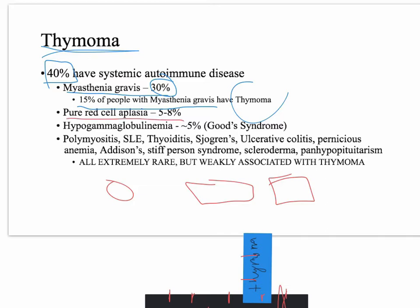There's also pure red cell aplasia: if you have a thymoma, you have a 5% to 8% chance of coexisting pure red cell aplasia, and a 5% chance of hypogammaglobulinemia. When hypogammaglobulinemia and thymoma occur at the same time, it's called Good's syndrome. There is also a very small percentage chance of associated polymyositis, SLE, thyroiditis, Sjögren's, ulcerative colitis, pernicious anemia, Addison's, stiff person syndrome, scleroderma, and panhypopituitarism.